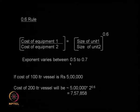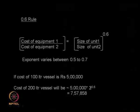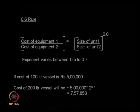The exponent can vary between 0.5 and 0.7 depending on how complicated the equipment is. A very complicated equipment gives an exponent of 0.7; a simpler one gives 0.5. So a 100 litre vessel at 5 lakhs means a 200 litre vessel costs 2 raised to the power 0.6 times 5 lakhs. This just gives you a ballpark figure. If you want the exact price, you go to the vendor and ask. But you can use this formula in your lab or office to get a quick estimate of cost.